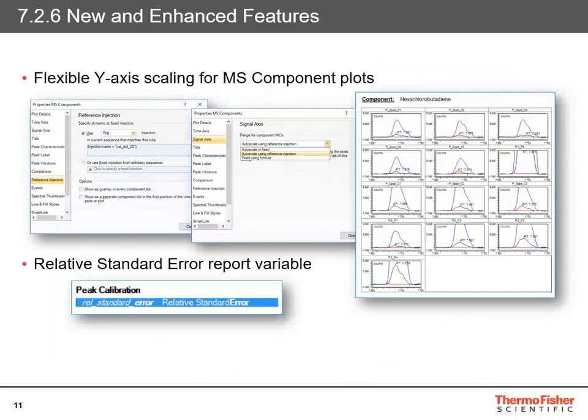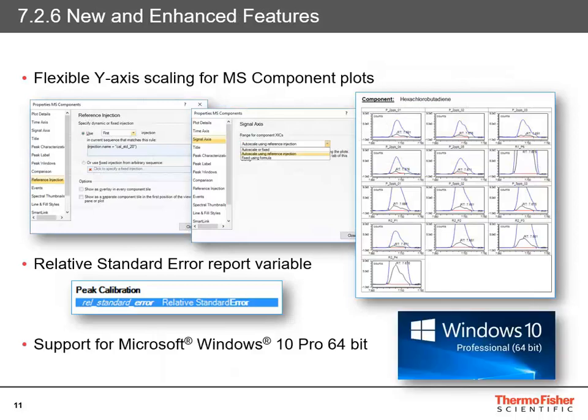There is also a new report variable — relative standard error — which you can now report directly into your reports. Finally, there is now support for Microsoft Windows 10 Pro 64-bit, which is now fully supported, validated, and tested, so you can use it to run Chromelion.